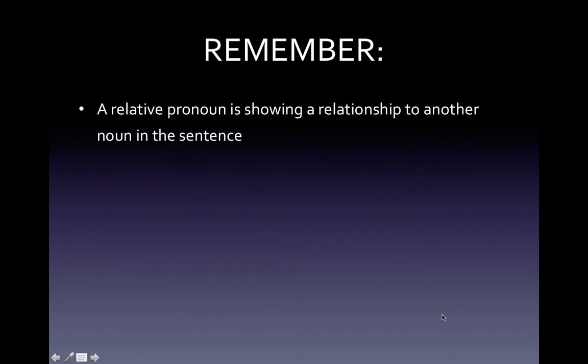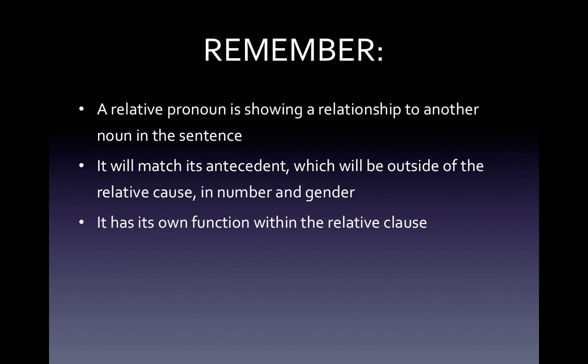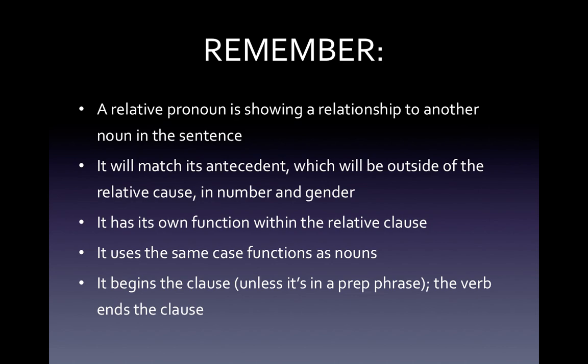Remember: a relative pronoun shows its relationship to another noun in the sentence — it's giving you more information about that other noun. It will always match its antecedent, which will be outside of the relative clause, in number and gender. It has its own function within the relative clause. If it happens to have the same function as its antecedent, that is coincidence. It uses the same case functions as nouns. It begins the clause unless it's in the prep phrase, and the verb ends the clause. Vale, discipuli.